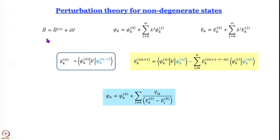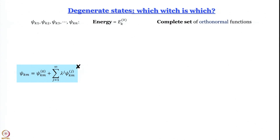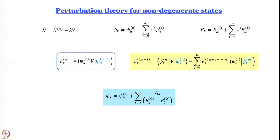First, we learned that you write the Hamiltonian as the unperturbed Hamiltonian plus a perturbation term. The form we are dealing with now is: the Hamiltonian of the perturbed system equals the unperturbed Hamiltonian plus lambda times V, where V is the perturbation potential and lambda is a parameter we can regulate to increase or decrease the amount of perturbation. Lambda finds its place in the expression for the corrected wavefunction and corrected energy.